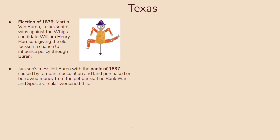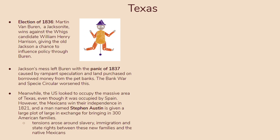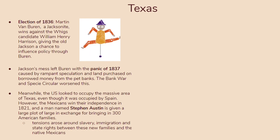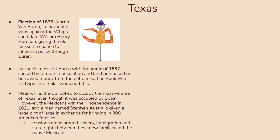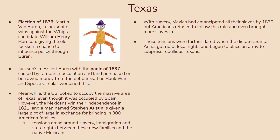The US was looking to occupy the massive area of Texas, even though it was currently occupied by Spain. However, the Mexicans won their independence in 1821, and Stephen Austin was given a large plot of land in exchange for bringing in 300 American families. Tensions arose around slavery, immigration, and states' rights between these new families and native Mexicans. Mexico had emancipated all their slaves by 1830, but Americans refused to follow this rule and even brought more slaves in, which angered the Mexicans further.